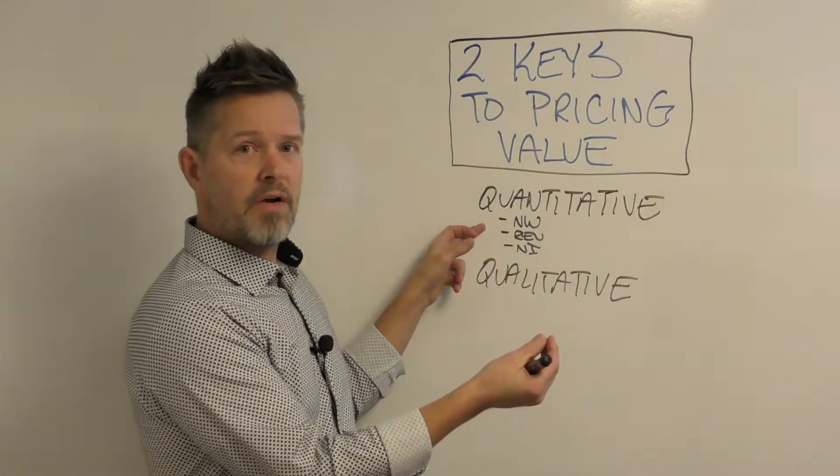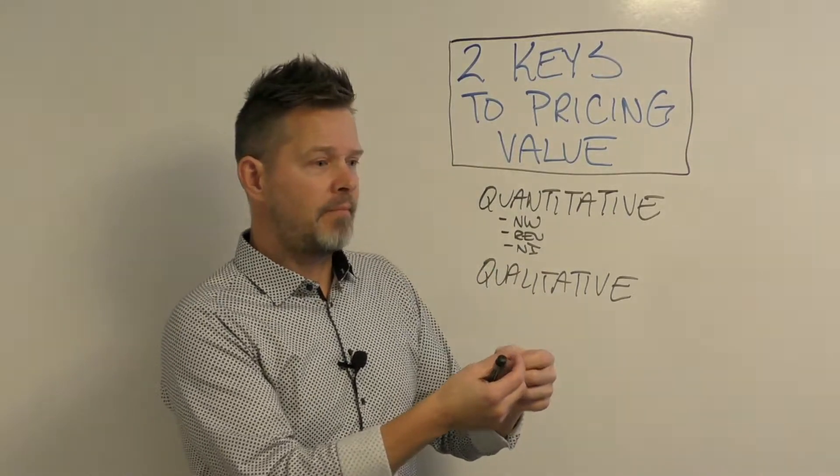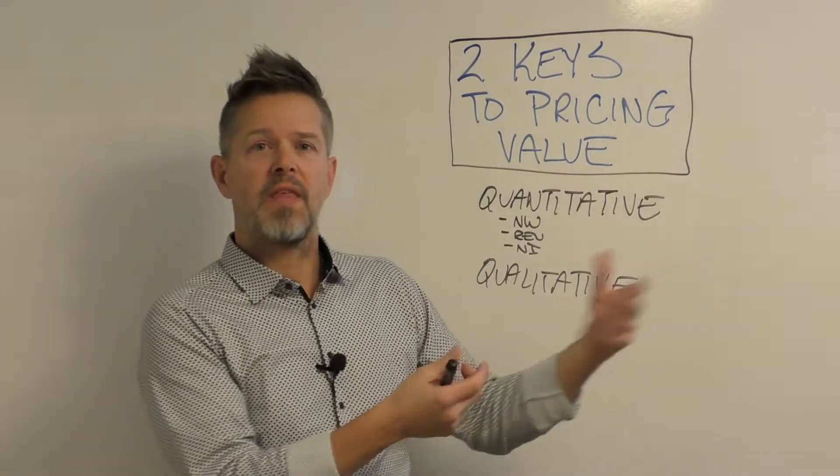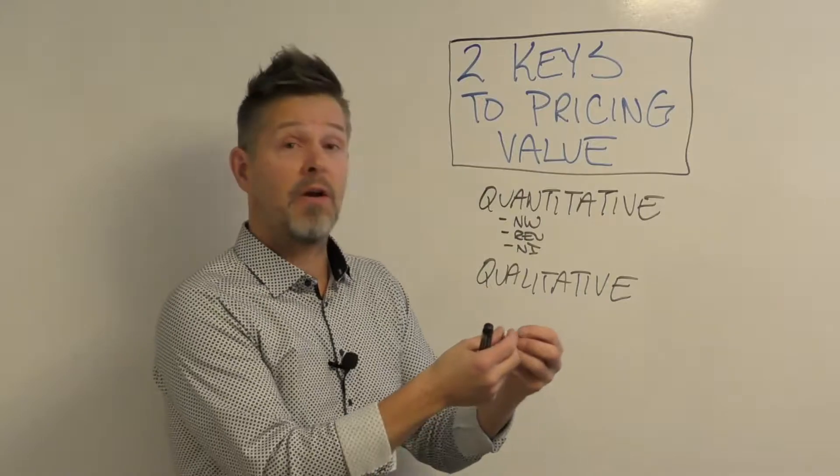Let's say that kicked out, I'm just using numbers for example, we'll say a thousand dollars. Let's say it was one percent, so it kicks out a thousand dollars of value to them.